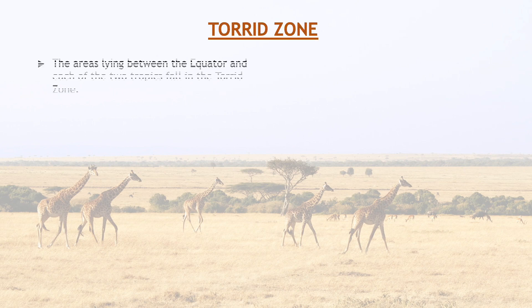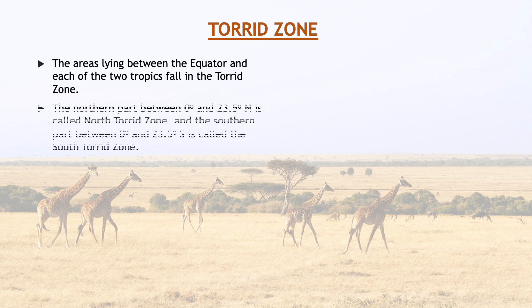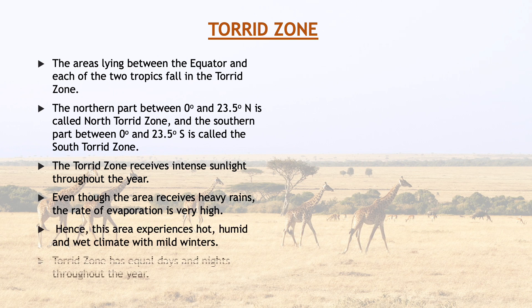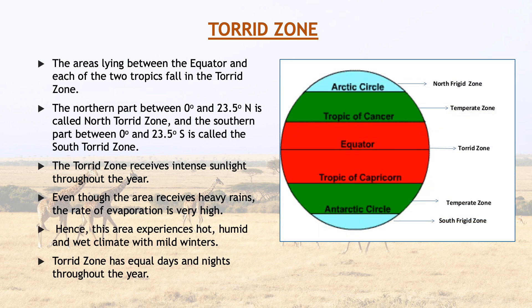Let's start with the torrid zone. The areas lying between the equator and each of the two tropics fall in the torrid zone. The northern part between 0 degree and 23.5 degree north is called the north torrid zone, and the southern part between 0 degree and 23.5 degree south is called the south torrid zone.